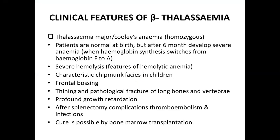Clinically, beta thalassemia is divided into thalassemia major — called Cooley's anemia — which is a homozygous type. Patients are normal at birth but after six months develop very severe anemia. This is because hemoglobin synthesis switches from Hemoglobin F to Hemoglobin A. During intrauterine life the gamma genes are active and beta genes are inactive, producing fetal hemoglobin.